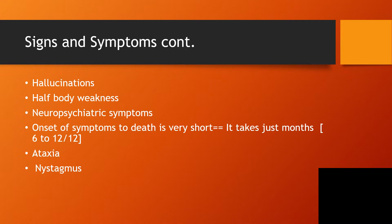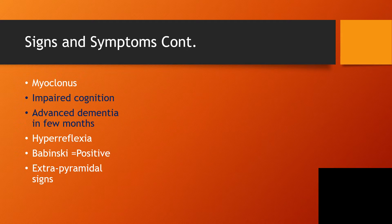The onset of symptoms to death is very short — just months, most of the time between 6 to 12 months. There is also the possibility of ataxia, nystagmus, and myoclonus. This is a differential diagnosis of dementia because there is the possibility of impaired cognition and advanced dementia developing within a few months, along with hyperreflexia, positive Babinski sign, and extrapyramidal signs.